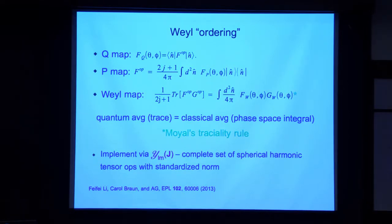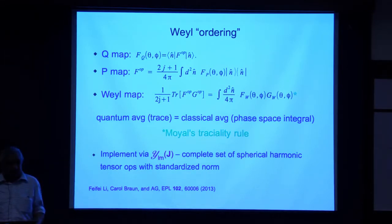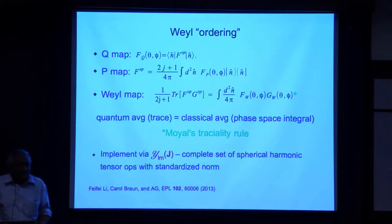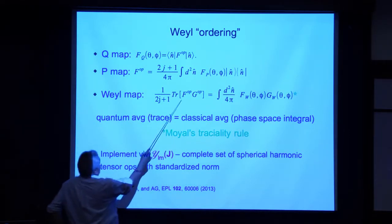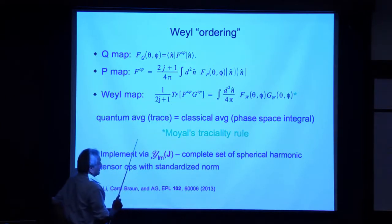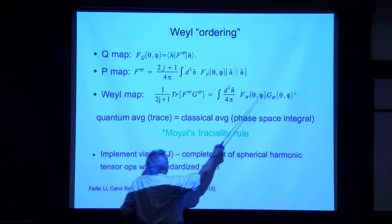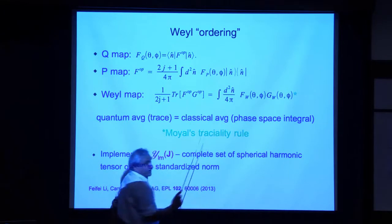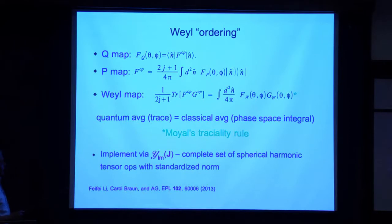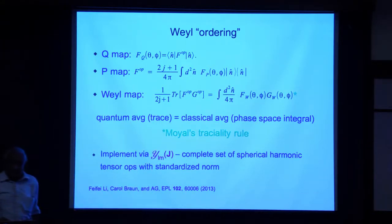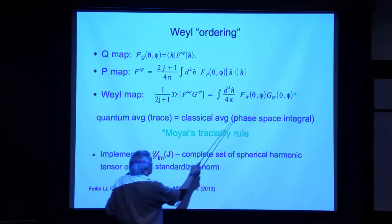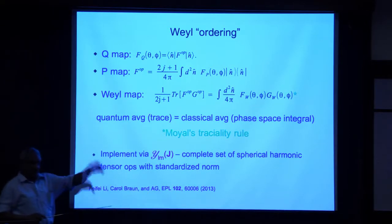Now there's a third map — the Weil map. For systems with position and momentum degrees of freedom, this map is defined in two lines in Weil's book from 1928. For angular momentum or spin, you have to do it indirectly through Moyal's traciality rule. That says: if you give me two operators F and G, the trace of their product — suitably normalized — should equal the integral of the product of the corresponding C-number functions, integrated over the sphere. Physically, this says the quantum mechanical average obtained by taking the trace equals the classical average of the product of the corresponding functions — a classical average being an integral over all phase space.